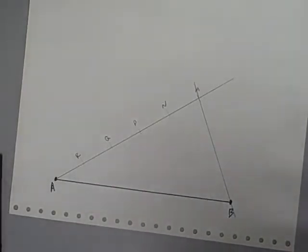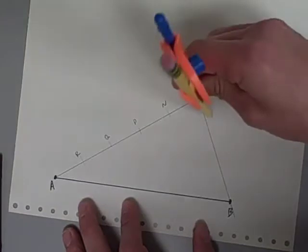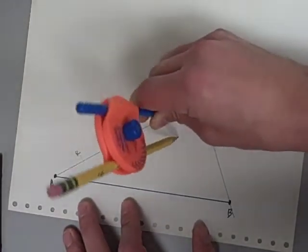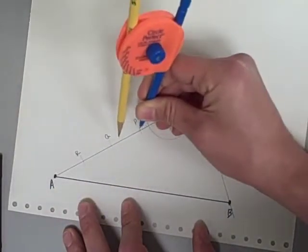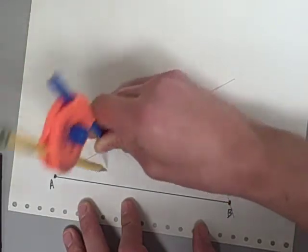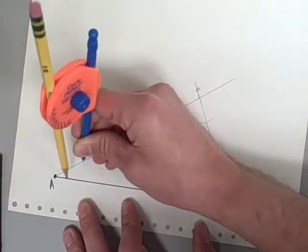So the way that you make parallel lines is to copy angles. So I'm only going to copy this angle through point N. I'm also going to copy it through point P, point Q, and also through point R.